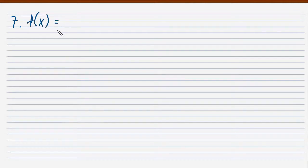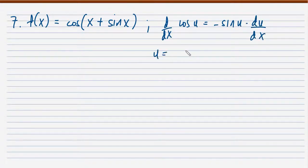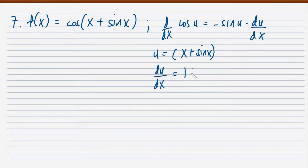Problem number 7. We have f of x is equal to cosine of (x plus sine x). This falls under the derivative of cosine u, which is equal to negative sine u times the derivative of u with respect to x. Our u here is x plus sine x, and the derivative of u is: the derivative of x is 1, then the derivative of sine x is plus cosine x.